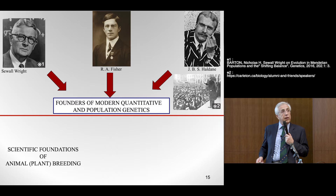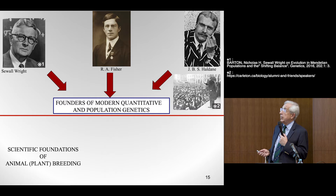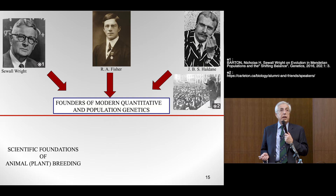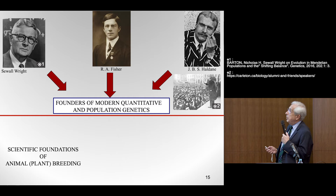Wright made many contributions, notoriously the concept of the inbreeding coefficient, and also an important result from population genetic theory was the equilibrium distribution of allelic frequencies under a pure neutral and random fluctuation model.